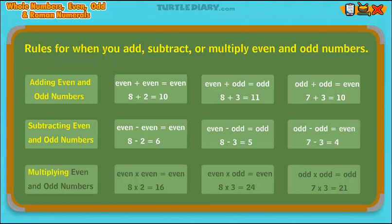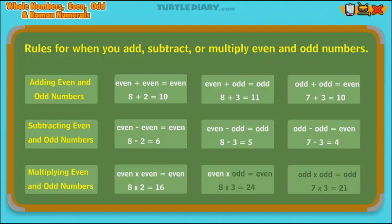Multiplying even and odd numbers: even times even equals even, even times odd equals even, odd times odd equals odd.